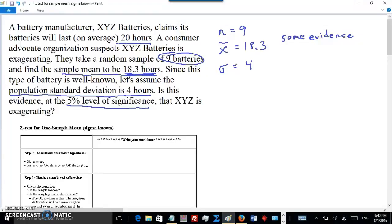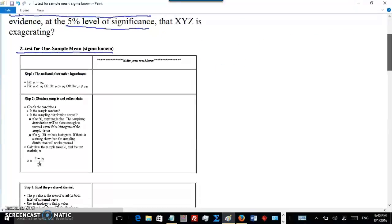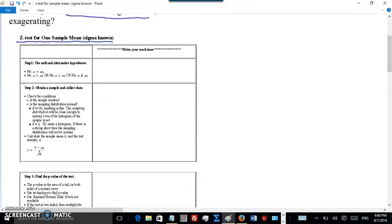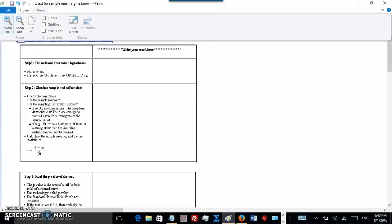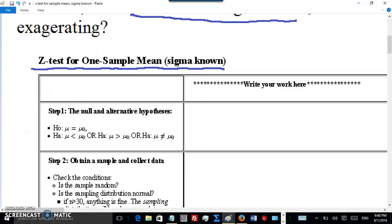This is the Z test for one sample mean. Sigma is known. Sigma is 4 here. Step 1, the null and alternate hypotheses. The null hypothesis is saying that μ is 20, that the real population mean of the batteries is 20, just like the manufacturer claims. Nothing fishy going on. That's what null hypothesis is all about.